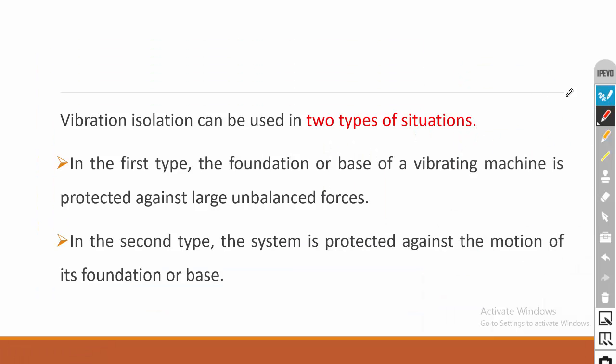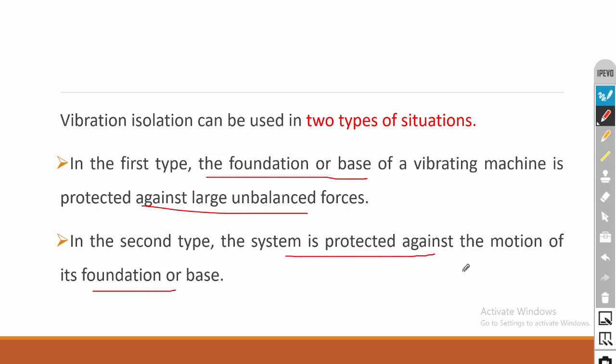Vibration isolation is used in two types of situations. The first is when the foundation or base of a machine is protected against large unbalanced forces — the foundation is rigid and the machine is vibrating. The second is when the system is protected against the motion of the foundation. In nuclear plants, the nuclear reactor is isolated from the foundation so that vibration from an earthquake is not transmitted to the reactor.